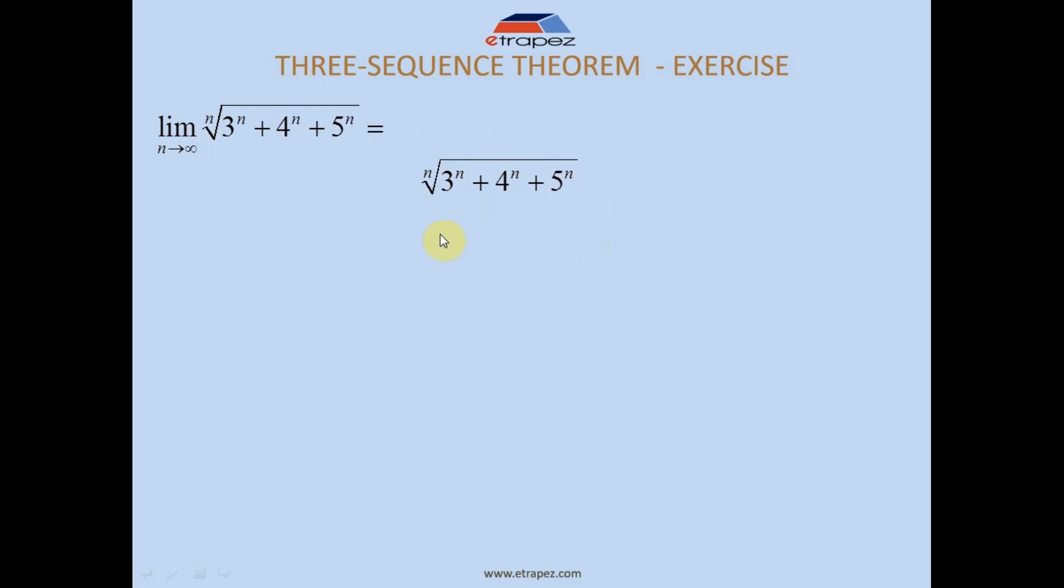How do you bound from above? You limit it with this sequence - also the nth root - and each constant here, no matter how many there are, you choose the largest of these numbers. From 3, 4, and 5, you choose the largest, which is 5.